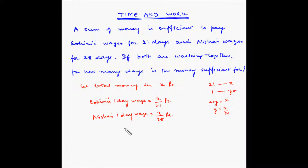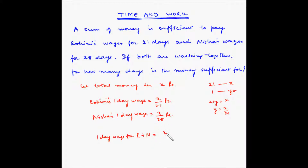Now if both of them are working together, then the one-day wage for Rohini plus Nisha will be equal to X divided by 21 plus X divided by 28.